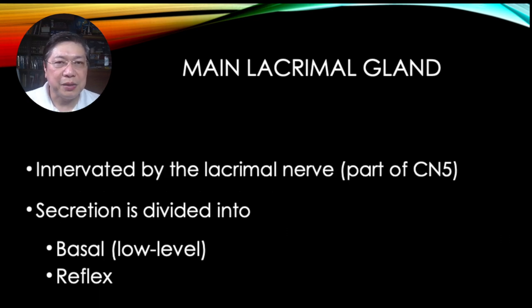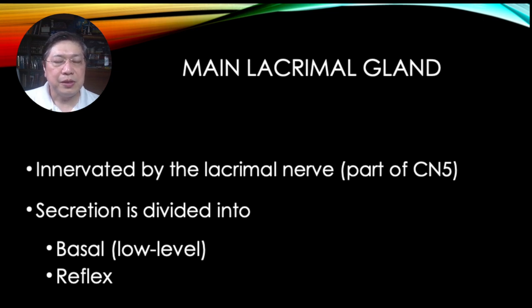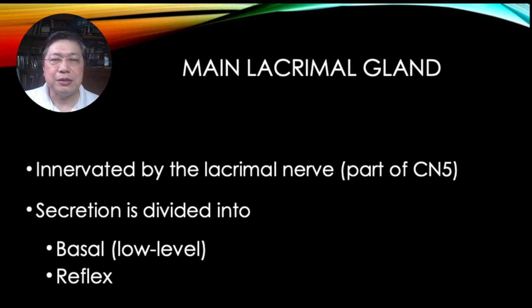The lacrimal gland is innervated by the lacrimal nerve, which is part of the 5th cranial nerve. If you have problems with the 5th cranial nerve — if it got transected or involved in an aneurysm or any pathology — then you would have dry eyes because your main lacrimal gland would not be secreting. Secretion is divided into two: basal low-level secretion and reflex secretion.